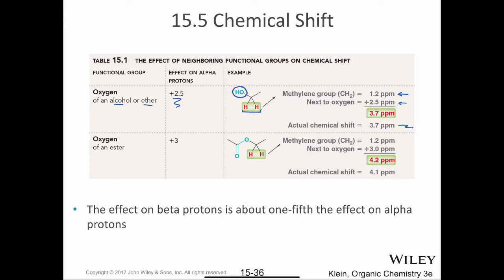If the two methylene protons are next to the oxygen of an ester, the effect is to increase the chemical shift by 3 parts per million. In this ester, for the two methylene protons right next to the oxygen, we start with the baseline of 1.2 parts per million, then add 3 parts per million, and get 4.2 parts per million. If you run the NMR spectrum on this ester, the actual chemical shift for those methylene protons is 4.1 parts per million. Again, you can see how the table is very effective at predicting chemical shifts.